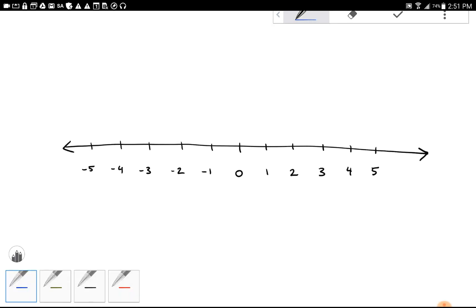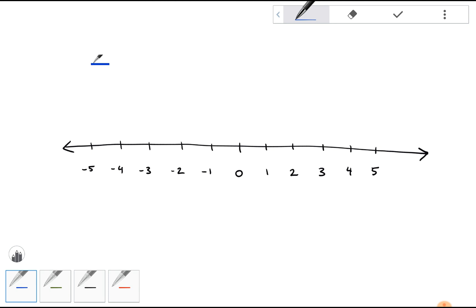Adding integers on a number line. Let's say I have plus two and I want to add plus three. I've added all these positive signs to make it quite obvious that I'm doing addition with positive integers.